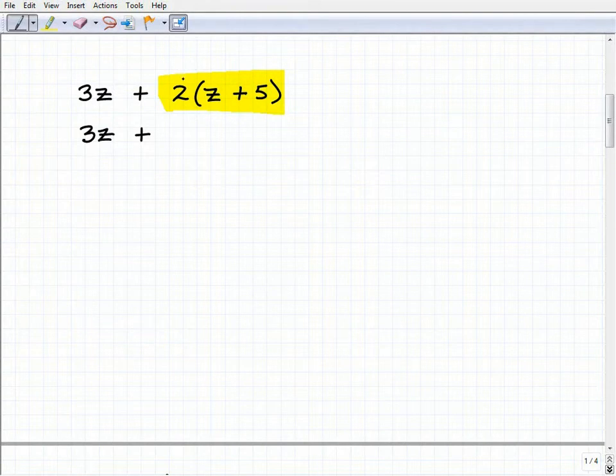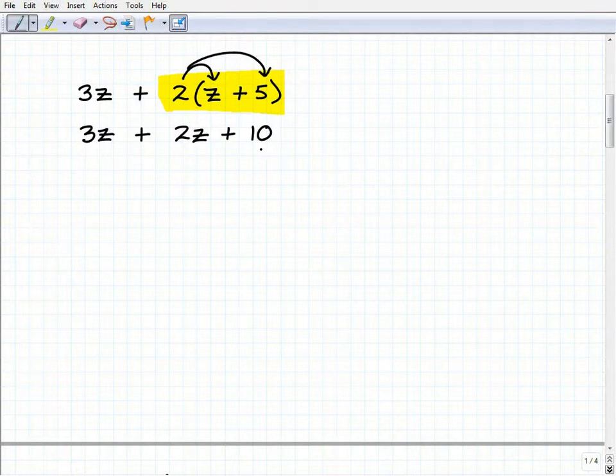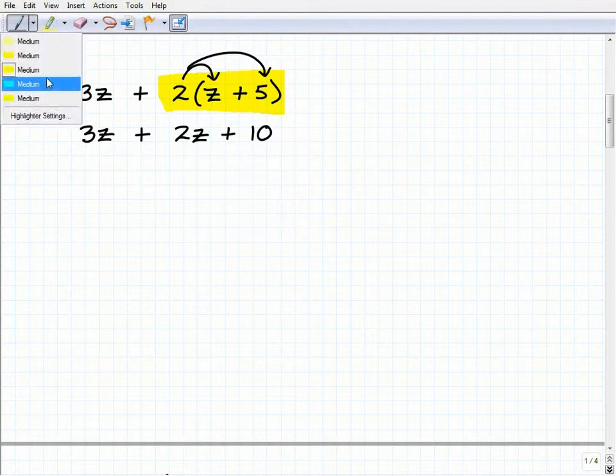Okay, so this is going to be 2 times z, 2z, plus 2 times 5, of course that's 10. So once I've done that, now I'm in a better position to see all the terms and I'm looking for like terms.